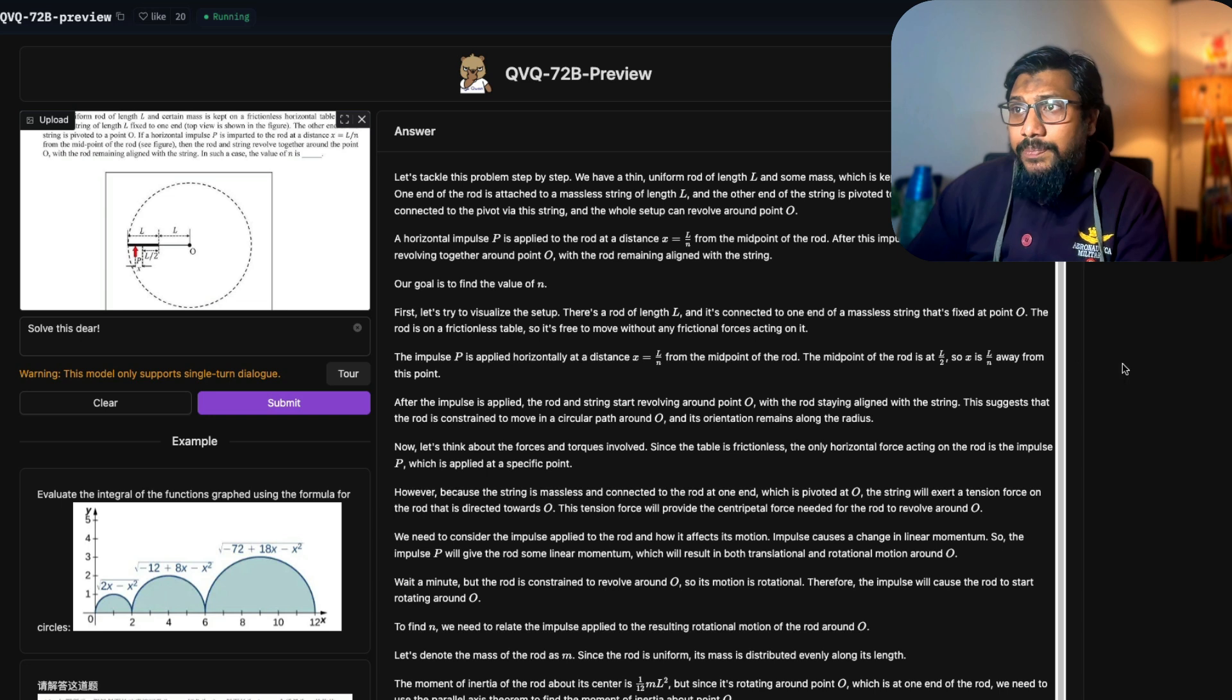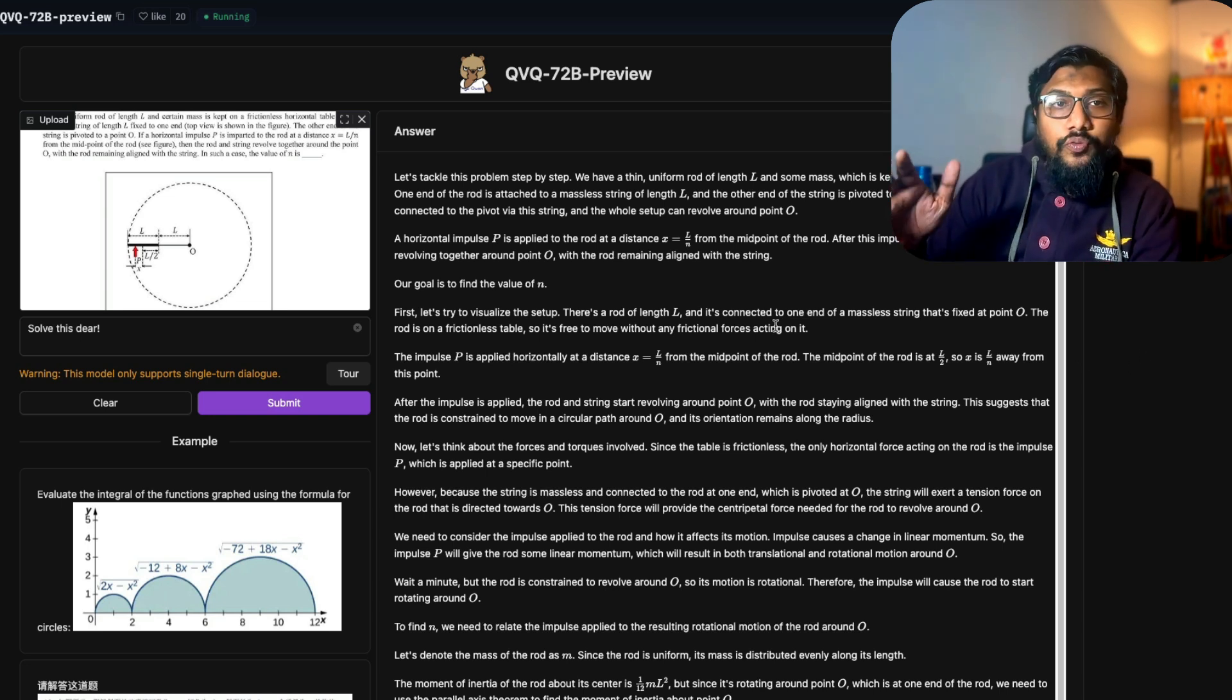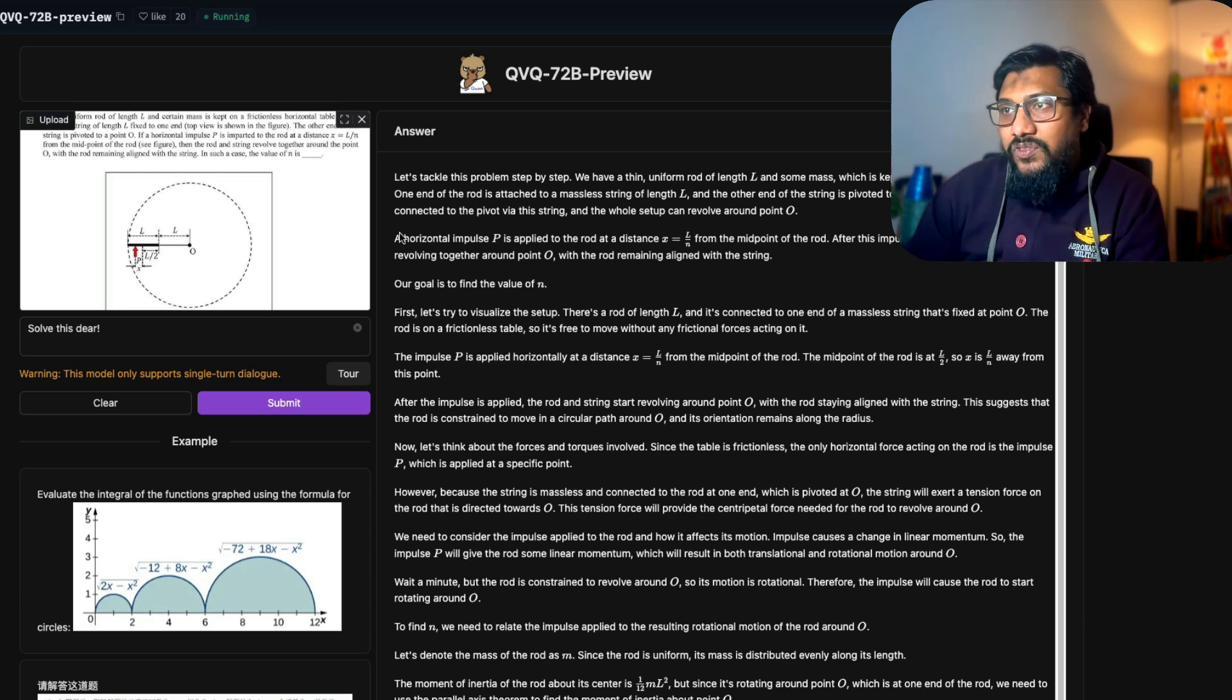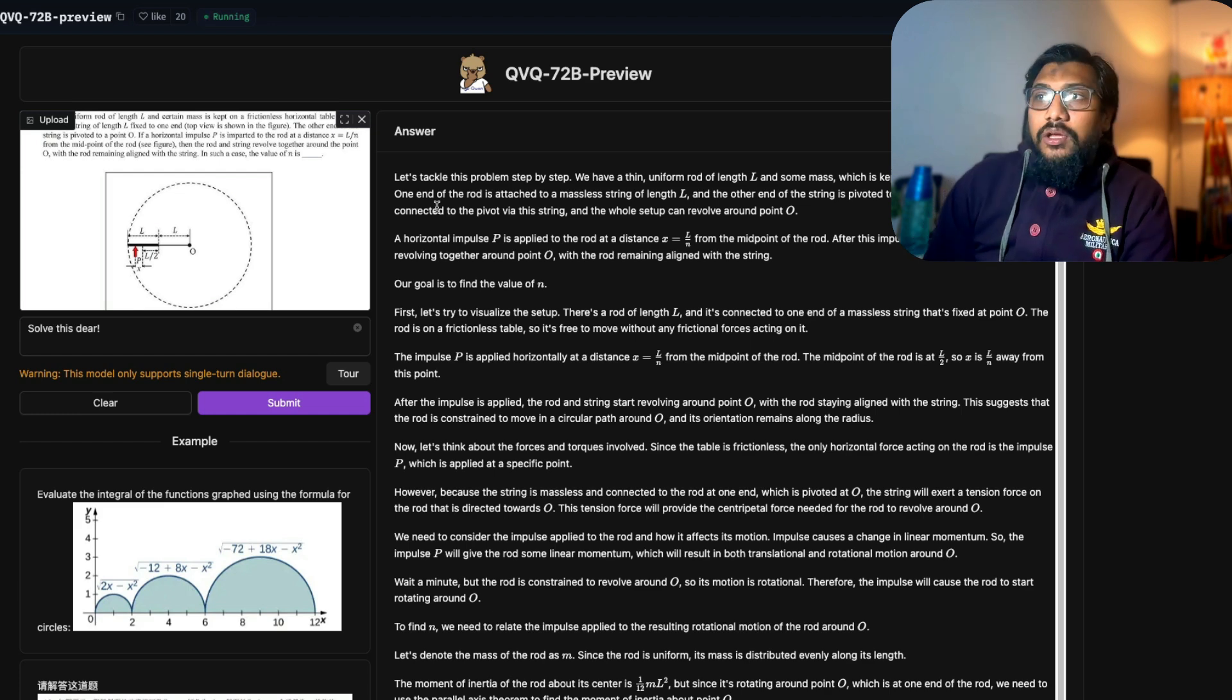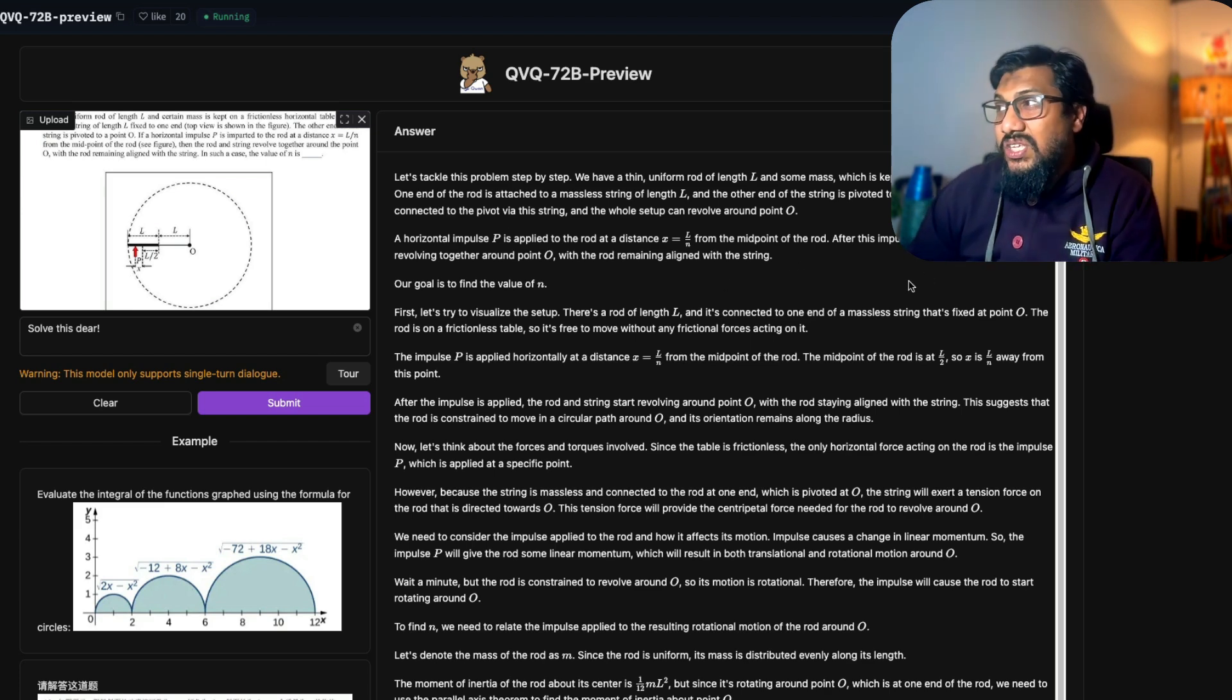In terms of the model performance, I kind of have a mixed review I would say. For example, I got this problem from the internet where somebody said Gemini 2.0 Flash solved this problem, O1 Pro solved this problem. When I gave this problem, it's from an Indian engineering entrance exam, like how you have SAT in the US. Very similar, India has something called JEE, Joint Entrance Exam. This is a problem that is given in there.